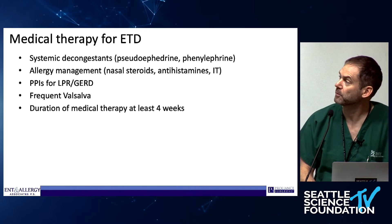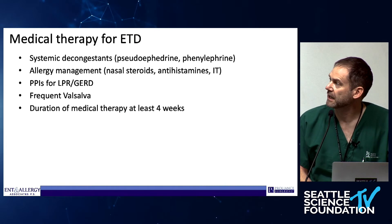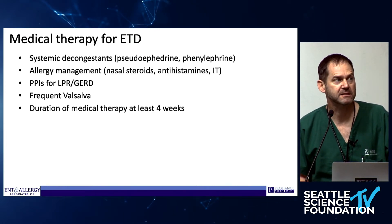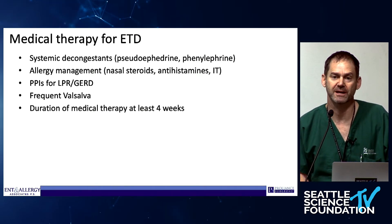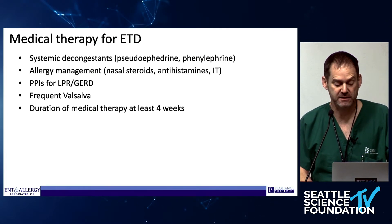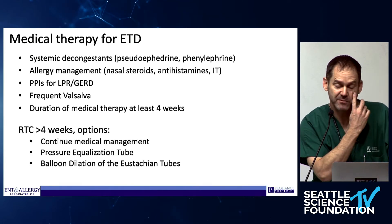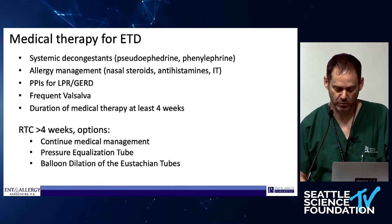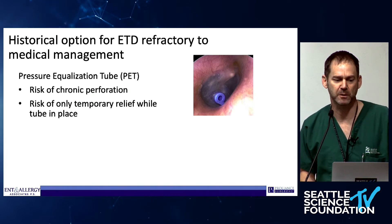Usually patients have to have medical therapy first, which makes sense. If they can get by with pseudoephedrine, tolerate allergy medicine, PPIs if they have reflux — frequent Valsalvas just to equalize pressure and negate that constant negative pressure is a key thing. Almost everybody needs to have medical therapy for four weeks. Then I'll have them come back and we can talk about their options: pressure equalization tube, balloon dilation, or continued medication.